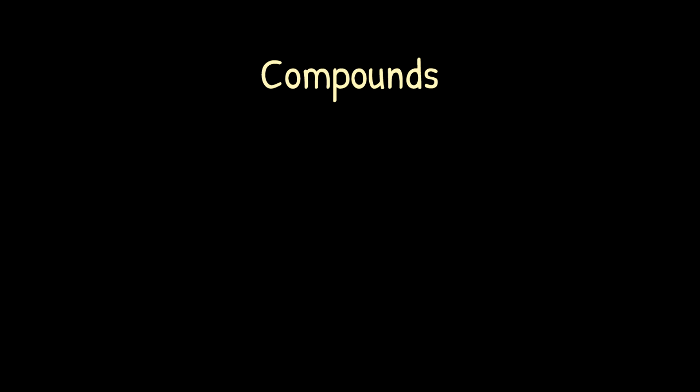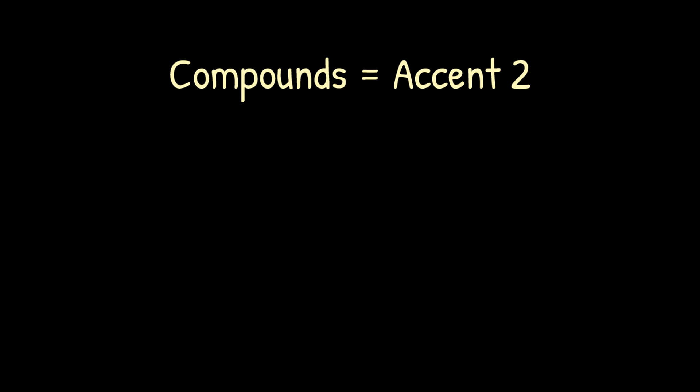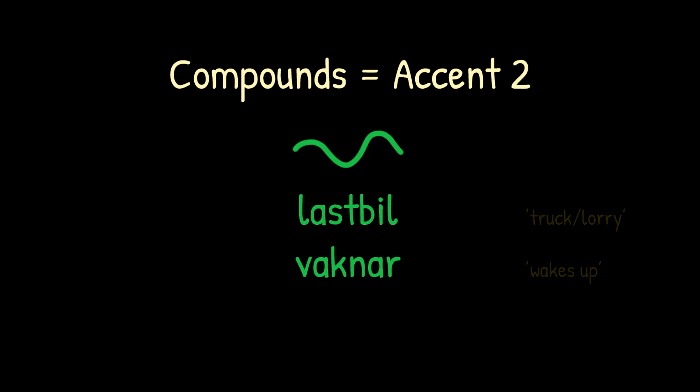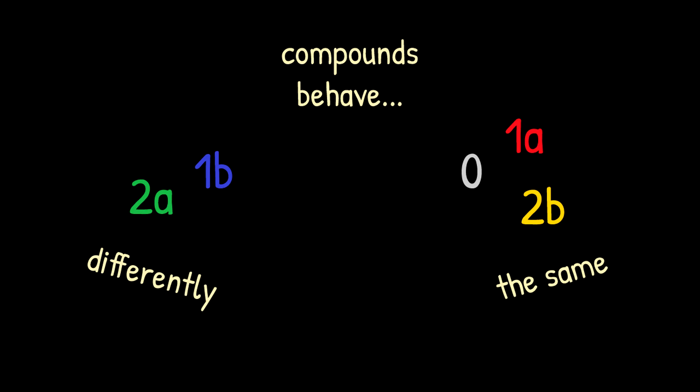Next up, compounding. In Swedish, virtually all compounds take Accent 2, as in 'lastbil' and 'smaksak'. And in many cases there's no difference in accentuation between a compound such as 'lastbil' and a non-compound like 'vaknar' — both take Accent 2 according to the patterns you've already seen. But in some varieties, compounds behave differently from regular words. This is specifically the case with type 1b and 2a, as I'm about to show you.